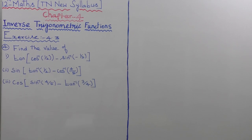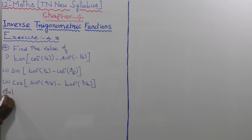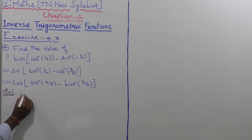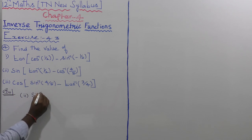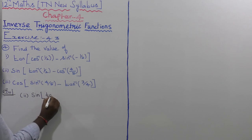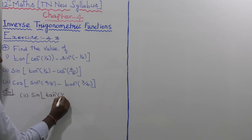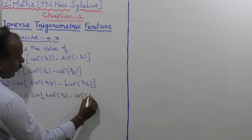x is 4.3. Fourth sum: find the value of the second subdivision. Let us take the second subdivision — sine inverse of sine of tan inverse of 1 by 2 minus cos inverse of 4 by 5.